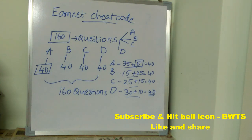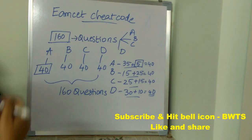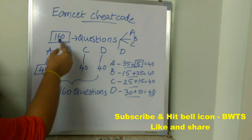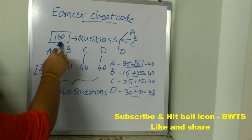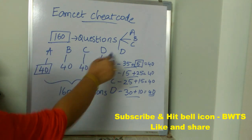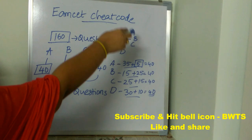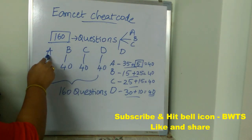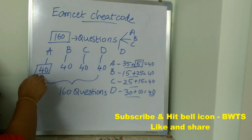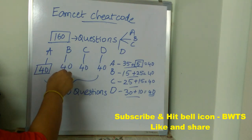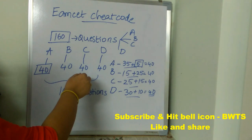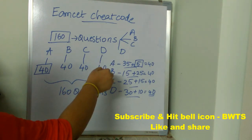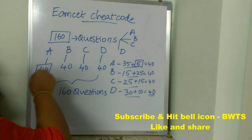Now I will explain the same cheat code in Telugu. In the answer sheet there are 160 questions with 4 options A, B, C, D. Option A will be the answer for 40 questions, Option B for 40 questions, Option C for 40 questions, and Option D for 40 questions — altogether 160 questions.